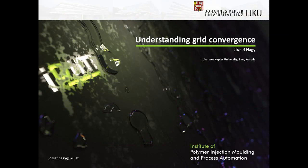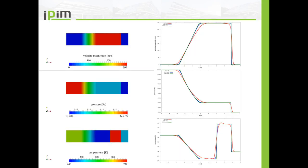Hello everyone, this is Jozef Noc here, and in this video you will learn the importance of grid convergence. Here you see the finished results of this tutorial — the velocity magnitude, the pressure, and the temperature in the geometry. On the right hand side you see three diagrams where I show you the importance of grid convergence, and how the results change with the refinement of the mesh.